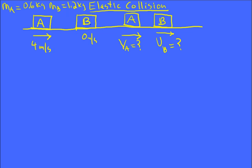And it's going to collide with a stationary mass that has a mass of 1.2 kilograms. And it's going to be an elastic collision, meaning the kinetic energy is the same before and after the collision, and usually means they bounce off of each other.